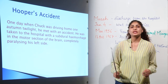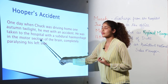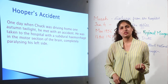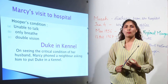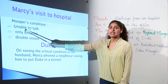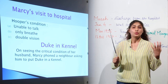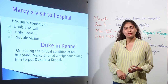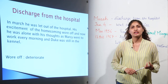Subdural refers to the area between the spinal cord and brain. Haemorrhage means excessive bleeding, and motor section refers to the main part of the brain. So when he was taken to the hospital, he was bleeding excessively. When his wife Marcy came to know about the accident, she rushed to the hospital. She found that Hooper was unable to talk — he could only breathe and had double vision. Looking at the critical condition of her husband, she called her neighbor to put the dog back into the kennel, as there was nobody to take care of the dog.